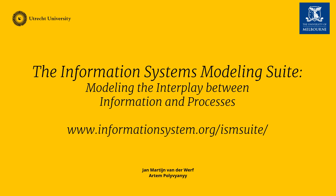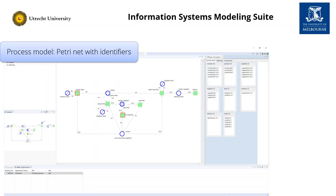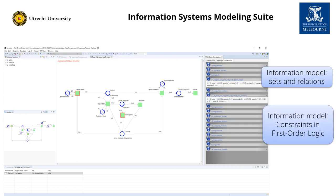ISM Suite is built as an Eclipse plugin and aims at modeling the interplay between information and processes. The tool uses a specific class of Petri nets called Petri nets with identifiers. In this class, tokens carry a vector of identifiers, and these point to actual entities in an information model. An information model consists of sets and relations. The current population is shown in a separate view. In addition, an information model has constraints, which are expressed in first-order logic.